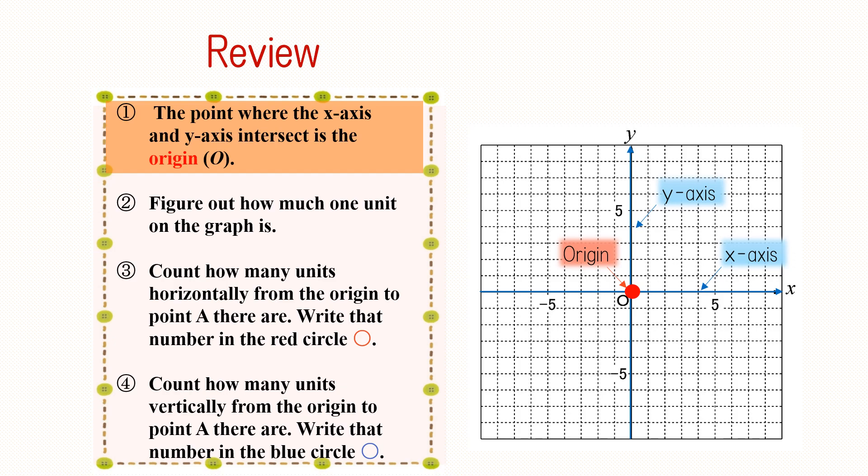Finally, let's review what we have learned. The horizontal number line is called the x-axis and the vertical number line is called the y-axis. The point O, where they intersect, is called the origin.